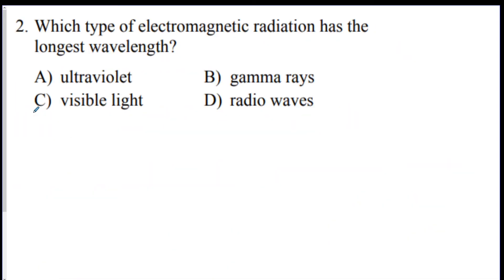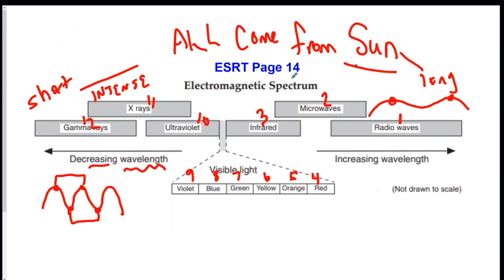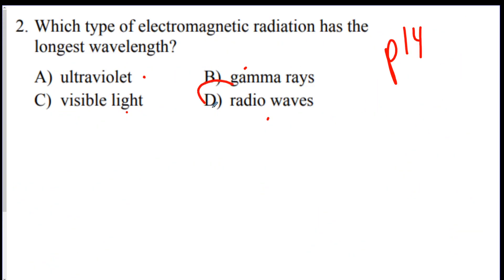Number two. Which type of electromagnetic radiation has the longest wavelength? So, you're going to go to page 14. Which is the chart we talked about. You're going to figure out radio, gamma, visible, or ultraviolet. Which one is the longest? So, if we go back here. As you go to the right, it gets longer. So, radio waves wins. Radio waves are going to be the longest wavelength. D. Gamma would be the shortest.